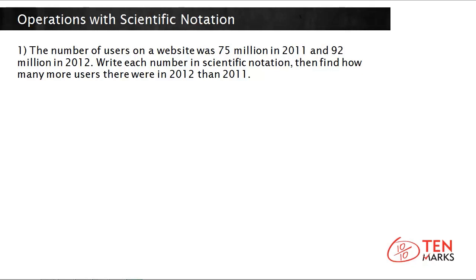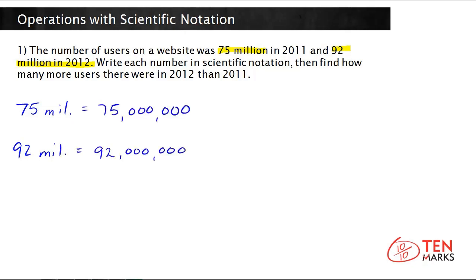Let's deal with the first part of this problem — we have to convert some numbers to scientific notation. We have 75 million and 92 million, the number of users in 2012. Let's write both of these numbers in standard notation. Now that we know the numbers in their full standard notation, you can begin to write the numbers in scientific notation.